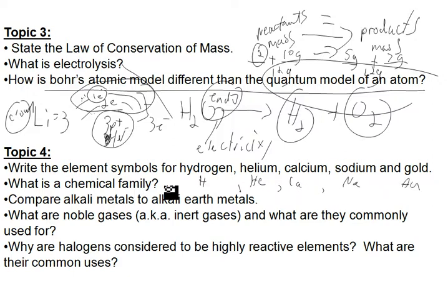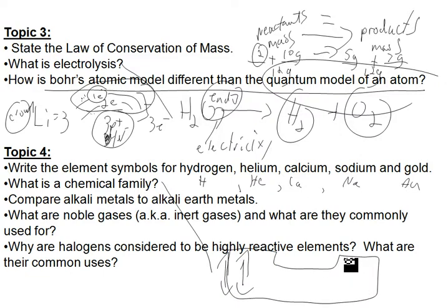What is a chemical family? So families are groups on the periodic table. So the periodic table looks something like this, and there are certain families which have the same properties.